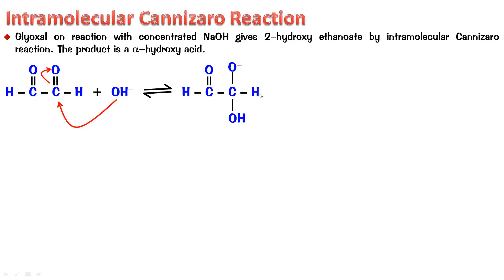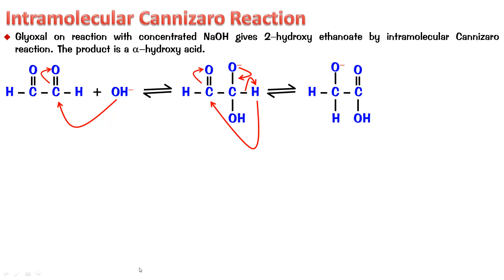The chances of the hydride going to attack another molecule of glyoxal are low. So the hydride shifts intramolecularly: the O⁻ comes back, the hydride attacks the adjacent carbonyl carbon, and the pi bond goes to oxygen. This intramolecular hydride shift — similar to a 1,2-hydride shift but not a carbocation shift — is followed by intramolecular proton transfer (IMPT). One aldehyde part gets oxidized and the other gets reduced — this is intramolecular Cannizzaro.